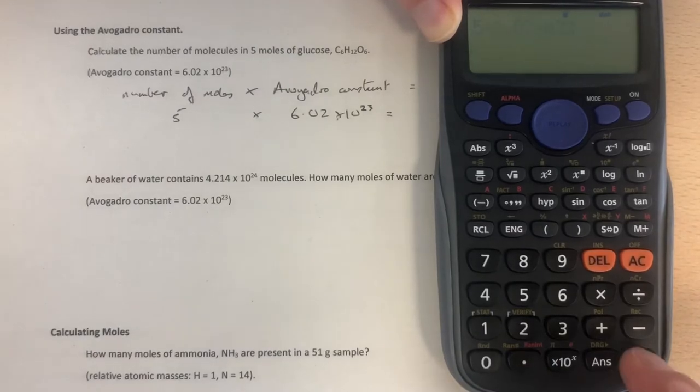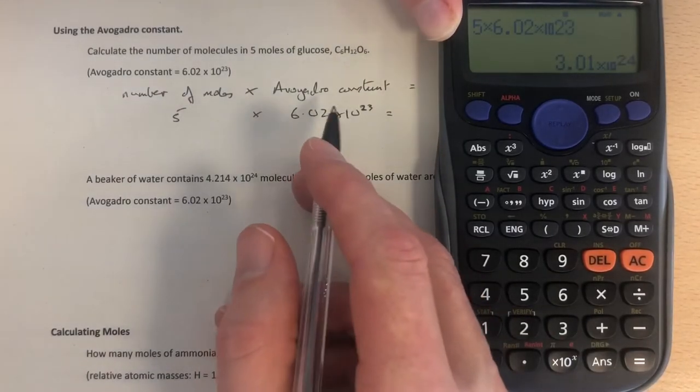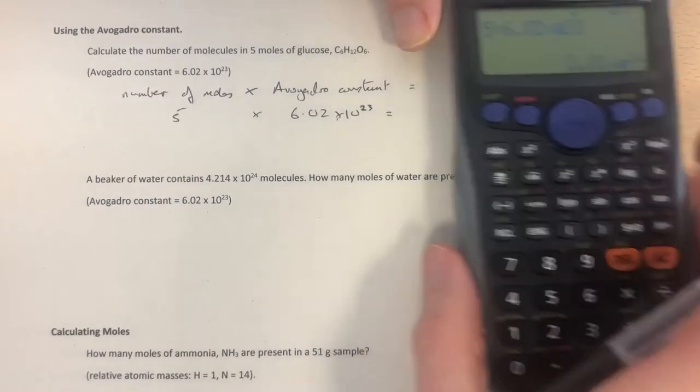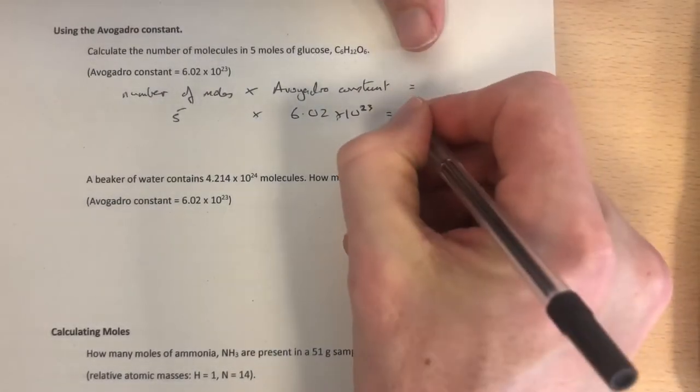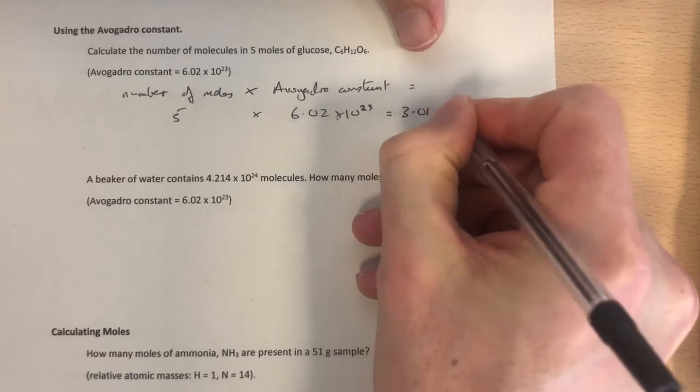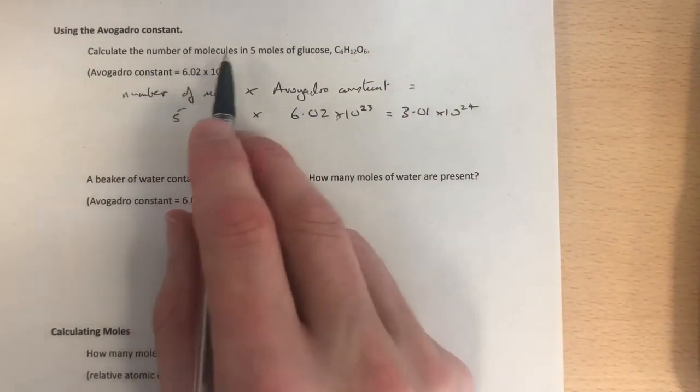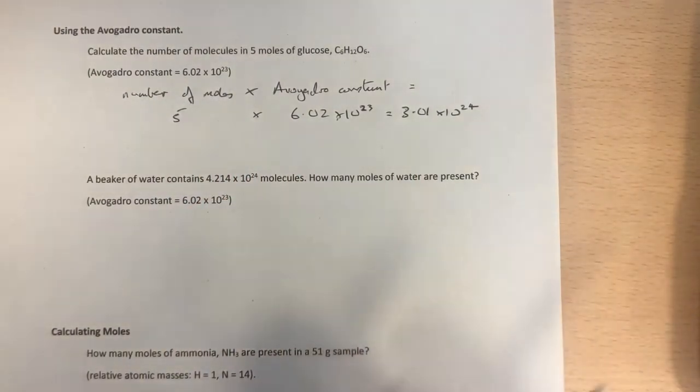After you've done that, press equals. And it's worth having a go at this and seeing you get the answer: 3.01 times 10 to the 24. So that's what we're going to write. 3.01 times 10 to the 24. There's that many molecules in 5 moles.